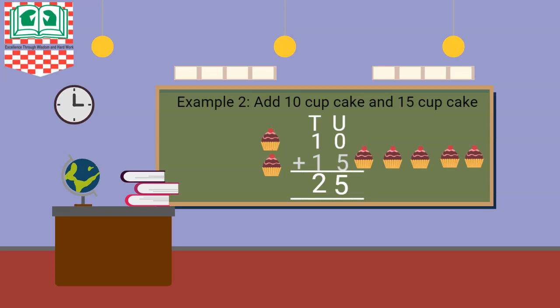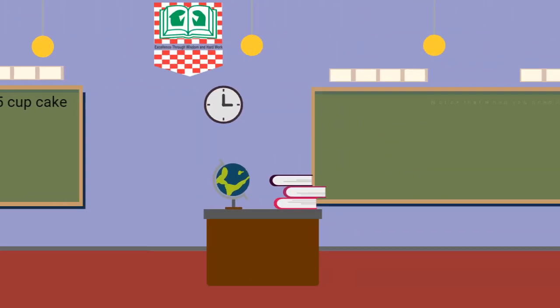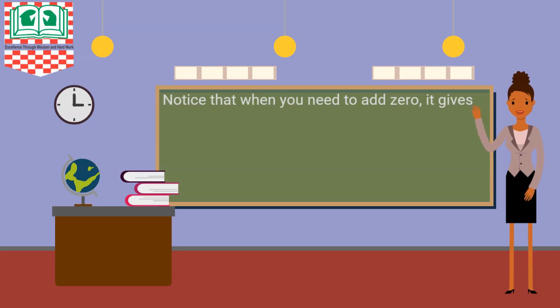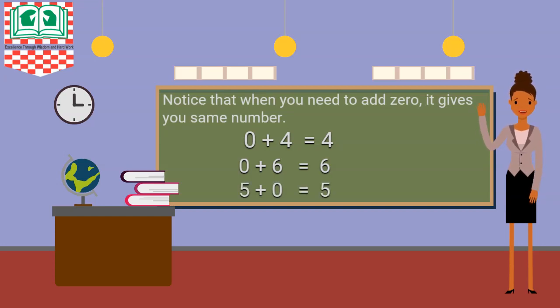I want us to notice something. When you have 0 or when you want to add 0 to another number, it gives you that same number. Like 0 plus 4 is 4, 0 plus 6 is 6, 0 plus 5 or 5 plus 0 is 5.